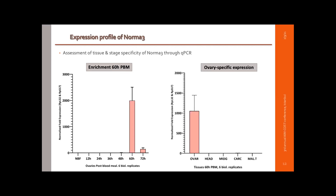NORMA3 showed almost zero expression in non-blood-fed ovaries and in the first time points after the blood meal. It then had a very intense peak of expression at 60 hours post-blood meal. It also showed ultra-specific expression in the ovaries — when we compared expression in ovaries, heads, midguts, carcasses, and Malpighian tubules, we saw no expression in any other tissue.